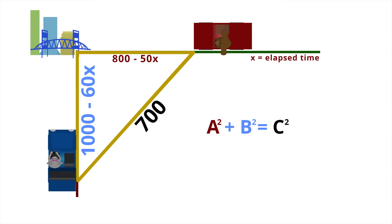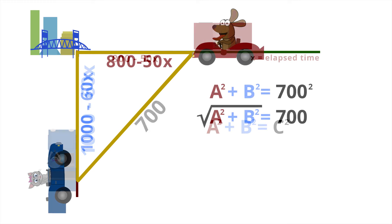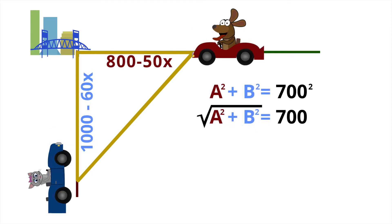So we have an equation that says C squared equals A squared plus B squared. So the square root of A squared plus B squared will equal C, and in our case C needs to be 700 miles.